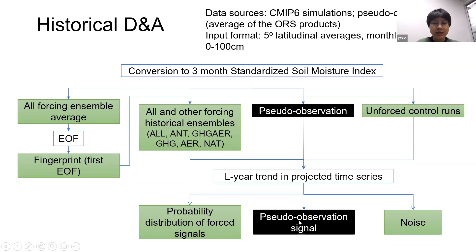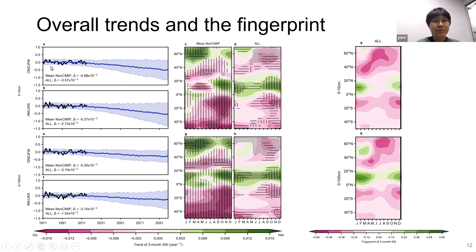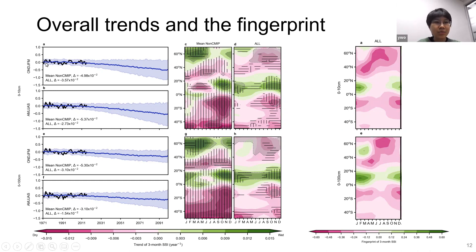With the simulated and observed signals and noise estimated, we proceeded to detection and attribution. First, we checked whether model-simulated trends and fingerprints look reasonable. The global average time series shows the black pseudo-observation and the blue simulated uncertainty averaged over all historical and future ensembles, all indicating that over time the global land surface is drying. There is more rapid drying in the surface soil layer (0–10 cm) than the root zone (0–100 cm). The latitudinal distribution of trends shows both pseudo-observation and simulation indicating wetting in the subtropics.